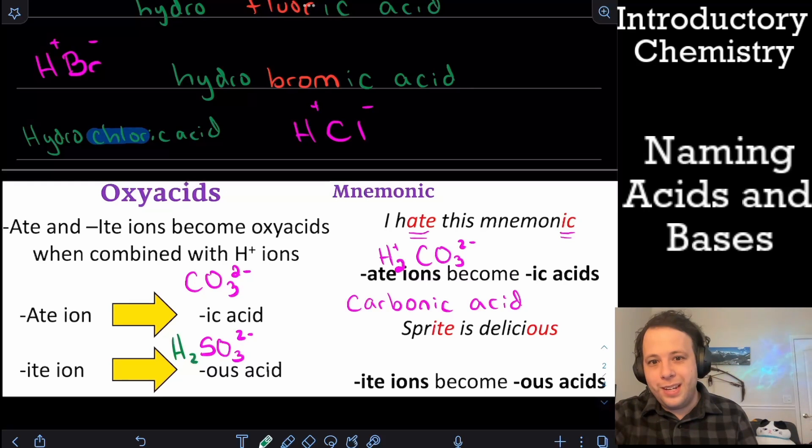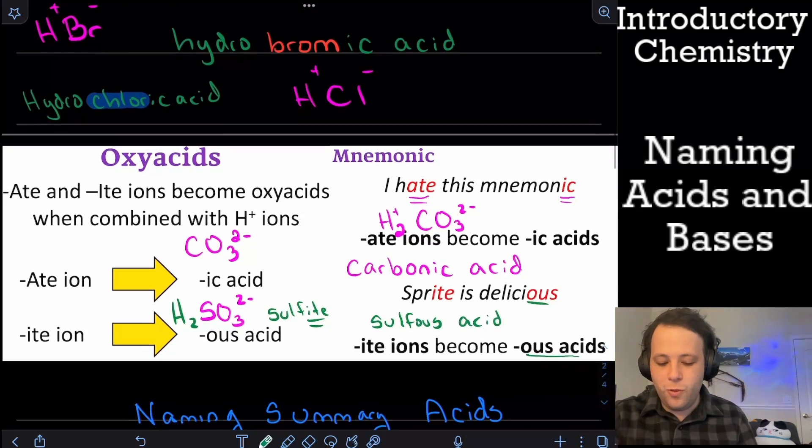And then how would that name be? Well, we're going to replace the ite ending of sulfite with ous. So in that case, it's going to be sulfurous acid. So we still have that acid part of the name when we go through that.